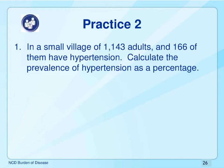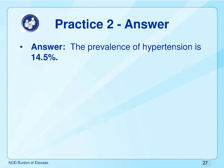Now it's your turn. Here you have a village of 1,143 adults of which 166 are hypertensive. Pause the recording and calculate the prevalence, recalling that this is a simple percentage calculation. We simply divide 166 by 1,143 to give us 0.145, which we multiply by 100 to give us 14.5% of the population is hypertensive. Not particularly difficult math, but a powerful calculation that tells us something concrete about what is happening in the population at a specific point in time.